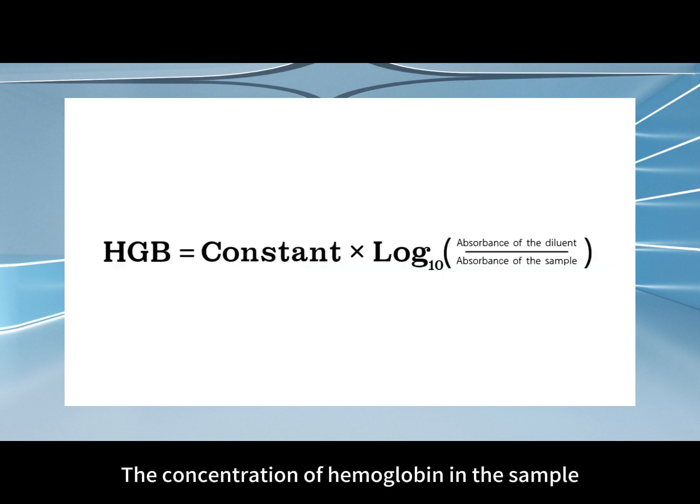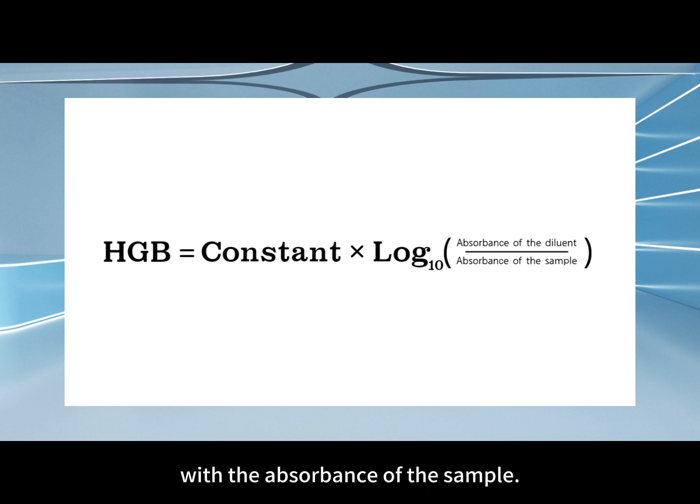The concentration of hemoglobin in the sample can be calculated by comparing the absorbance of the diluent with the absorbance of the sample.